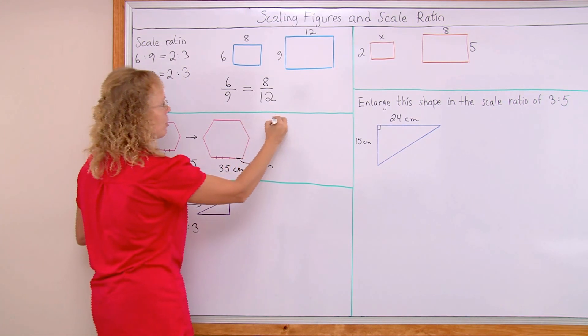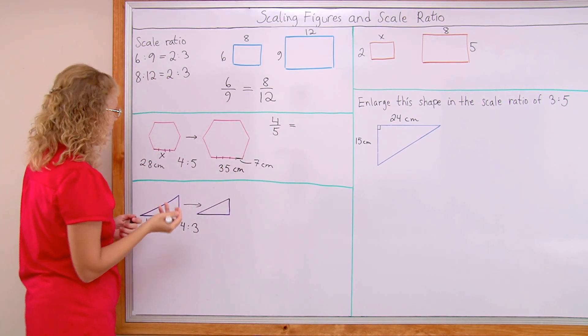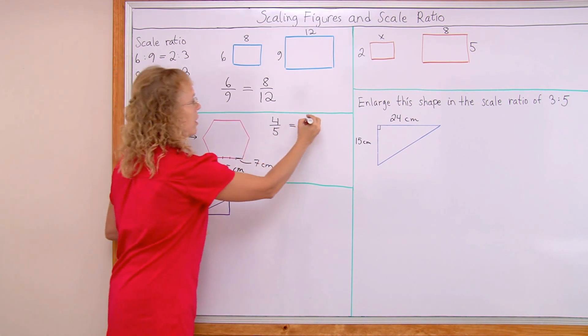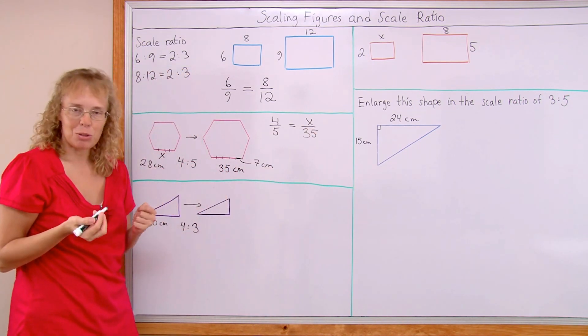You take this as your one ratio, 4 to 5. And then the other ratio is this side to this side, x to 35. This would be your proportion. If you solve it, you get x equals 28.